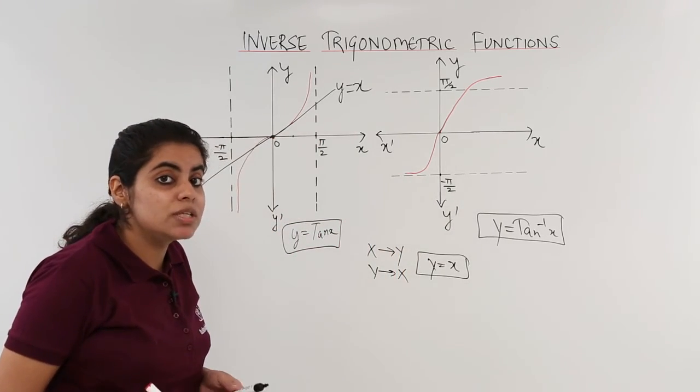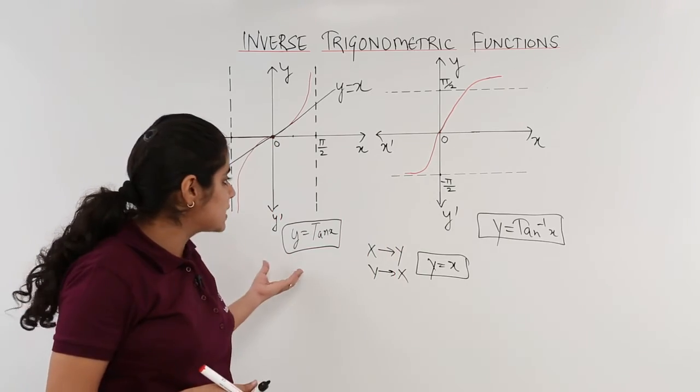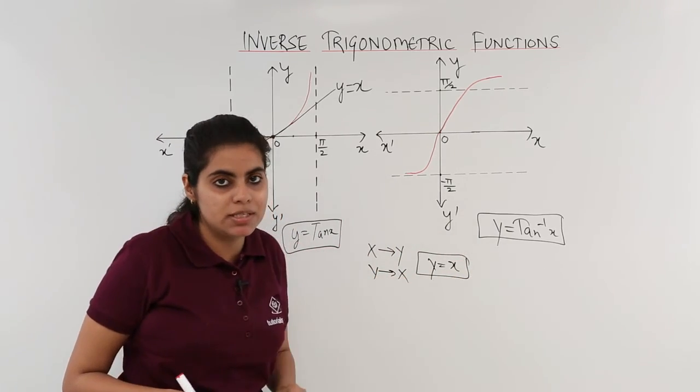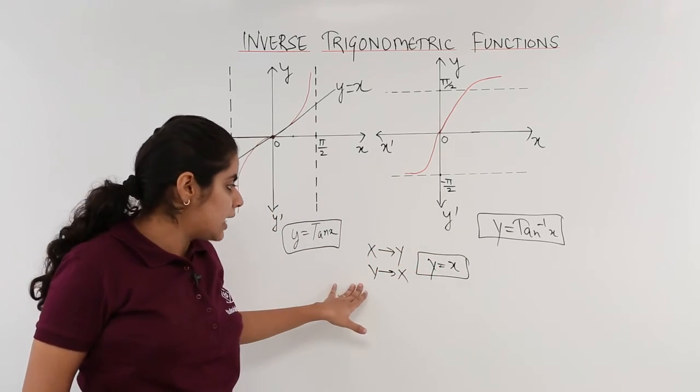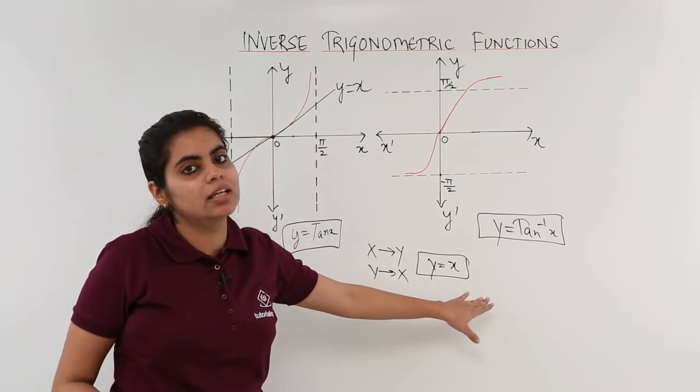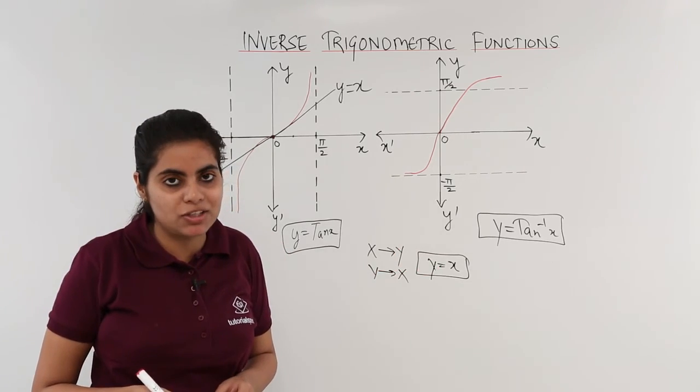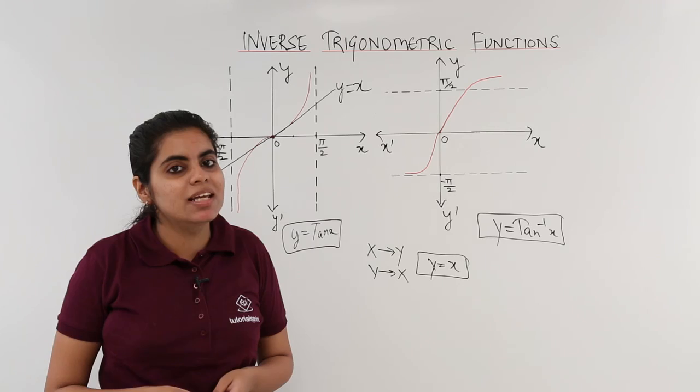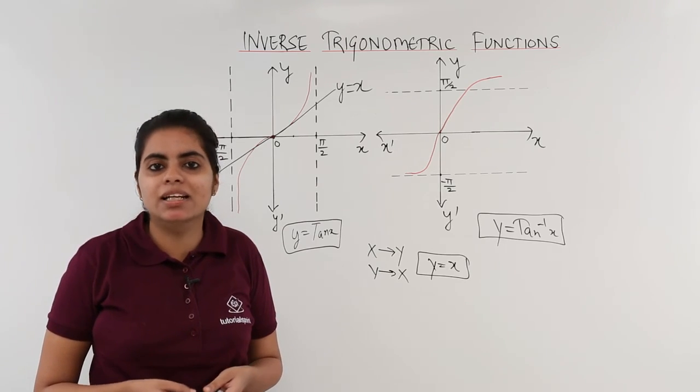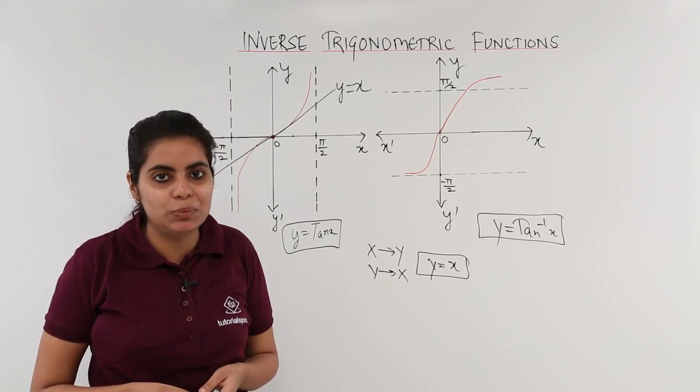So in this video, we saw the graph of tan x and then subsequently tan inverse x. Three steps we followed again. Y axis interchange with x. X axis interchange with y. And you have to take the reflection about the standard line y equals x. In the next video, we see the related graph of cot inverse x.